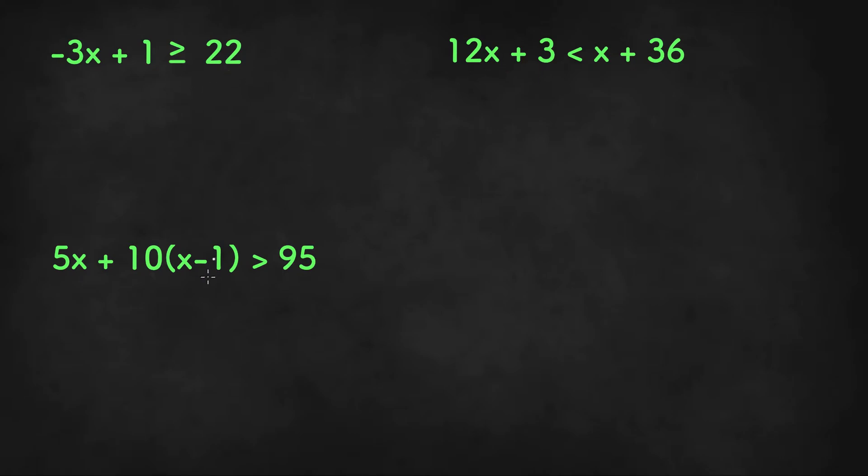So here we have three different multi-step inequalities. The first one is negative 3x plus 1 is greater than or equal to 22.